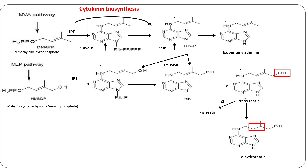In cytokinin biosynthesis, the isopentyl side chain of the cytokinin isopentyl adenine is added to adenine ribonucleotides by the enzyme isopentyl transferase or IPT. The ribosugar or sugar phosphates are removed by phosphoribohydrolases.